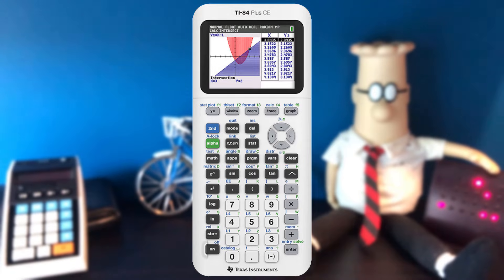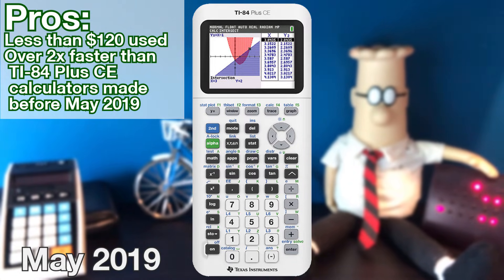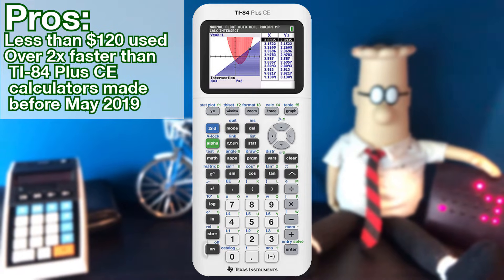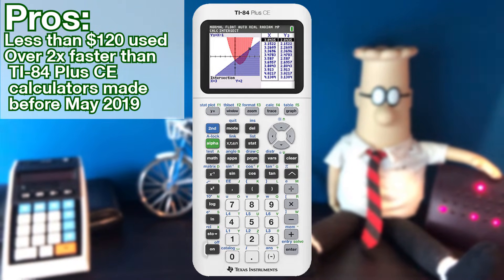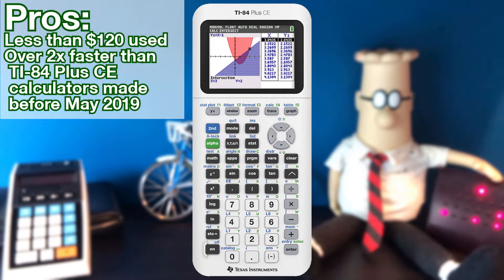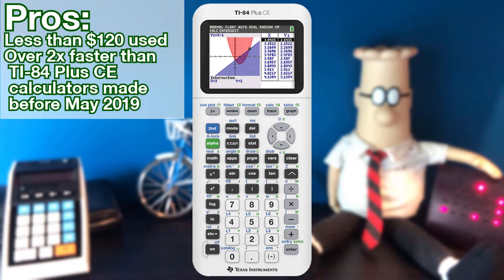new TI-84 Plus CEs made since May 2019 have refreshed hardware that is two times faster than the original TI-84 Plus CE. Even if you overclock the old calculator using a tool I made in the cart above, you could only get it up to 30% faster, not 200% faster.